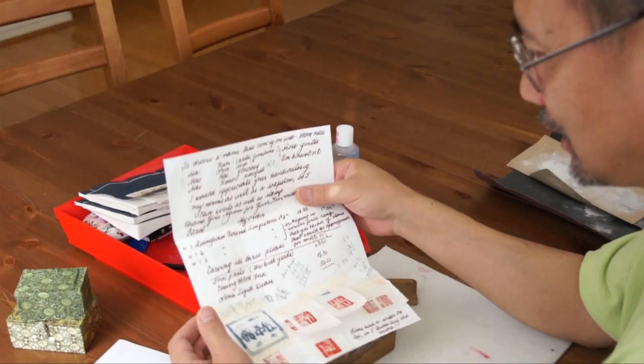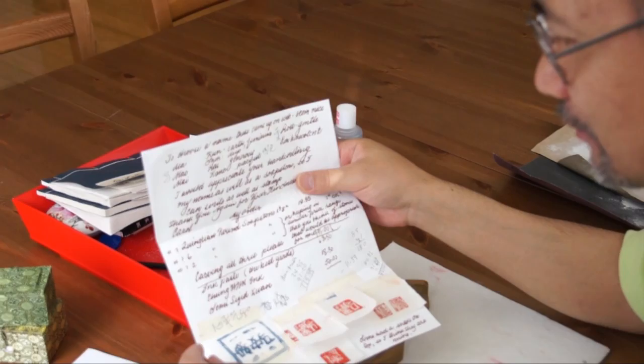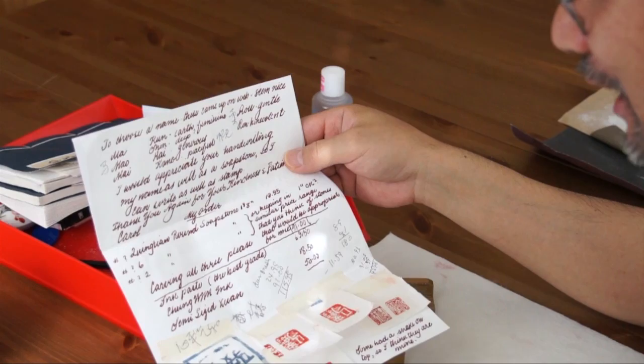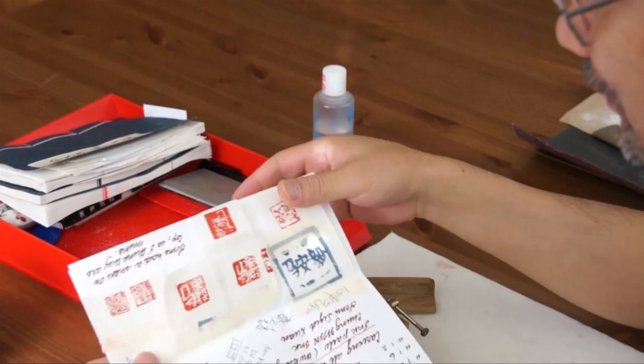Incidentally, this lady named Carol Marks. Today we're going to do a name chop for Carol Marks in California. She's a retired lady. She has been to China many times, so she has Chinese chops already, several of them.